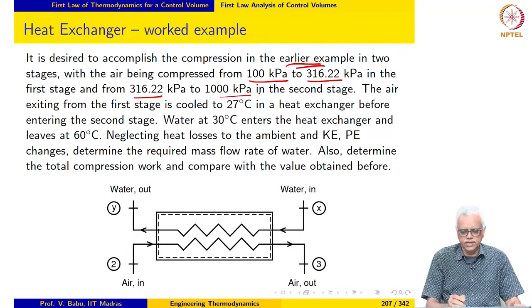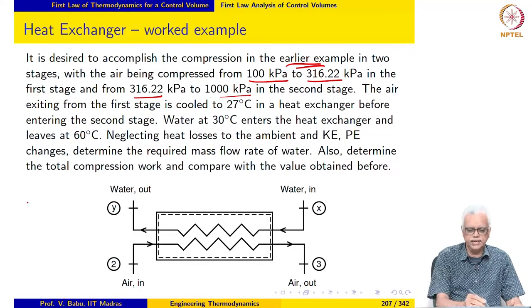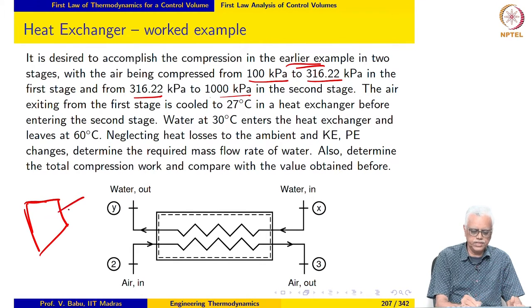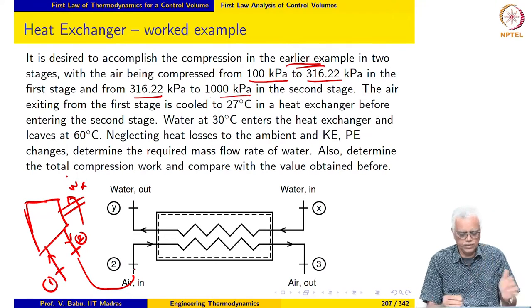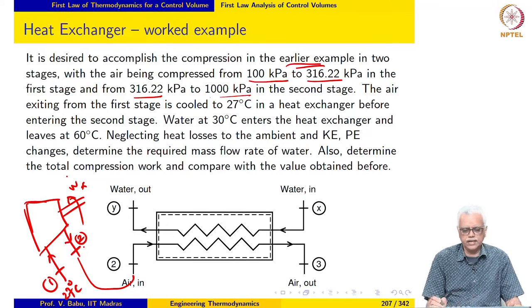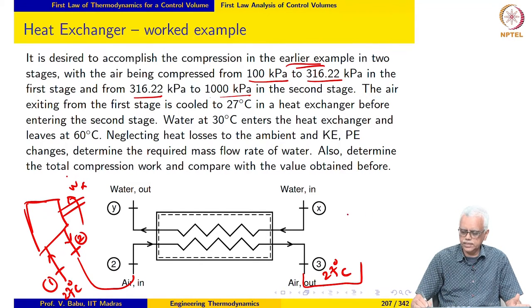In between the two stages, the air is taken to a heat exchanger where it is cooled down. It enters at a higher temperature after being compressed to 316.22 kPa, then it is cooled in the heat exchanger back to its original temperature of 27 degrees Celsius before being sent to the next stage compressor. So the arrangement has a first stage compressor, followed by the heat exchanger where air comes in at a higher temperature and is cooled back down to 27 degrees Celsius.